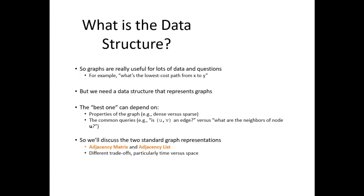Today we're discussing graph data structures. Graphs are really useful for lots of data and questions. For example, we have to check out the lowest cost path from X to Y. We need a data structure to represent graphs. We have to choose the best one that can depend upon the properties of the graph. We have common queries such as are U and V adjacent. We will discuss mainly adjacency matrix, adjacency list, and different trade-offs.